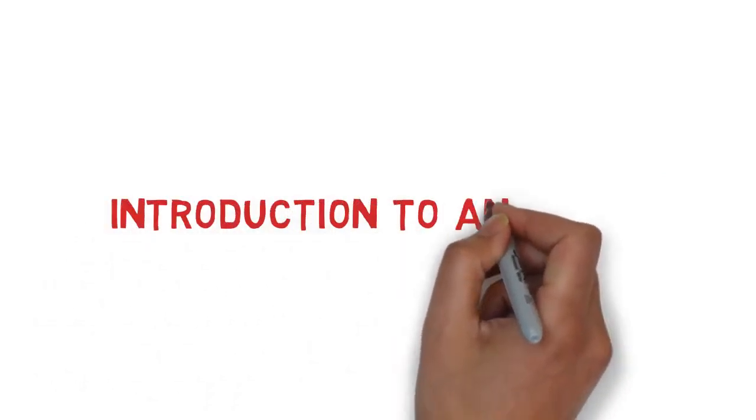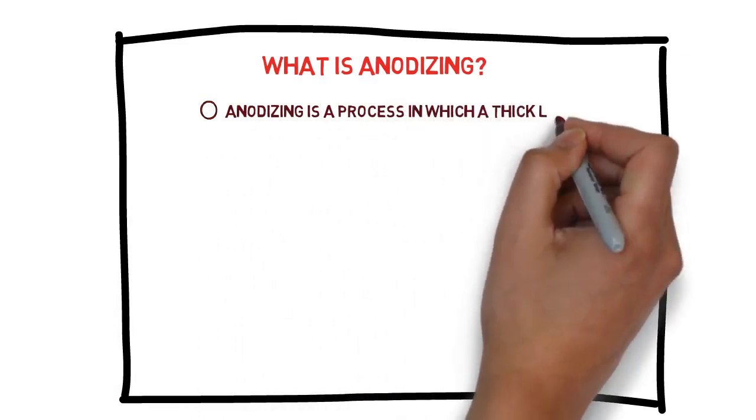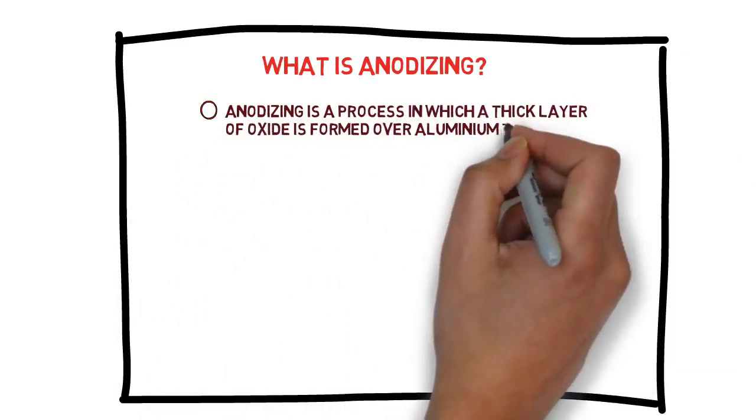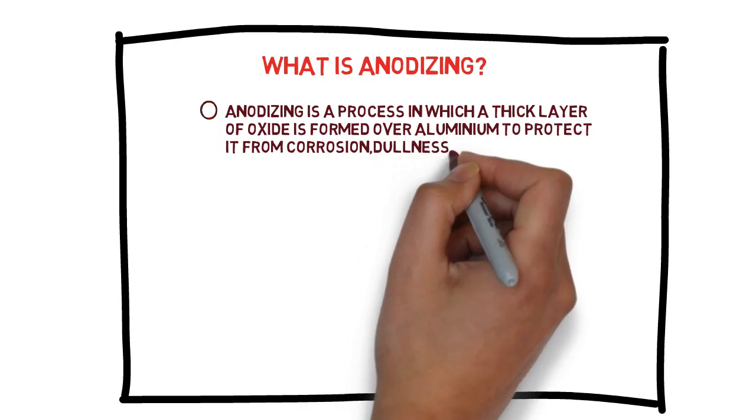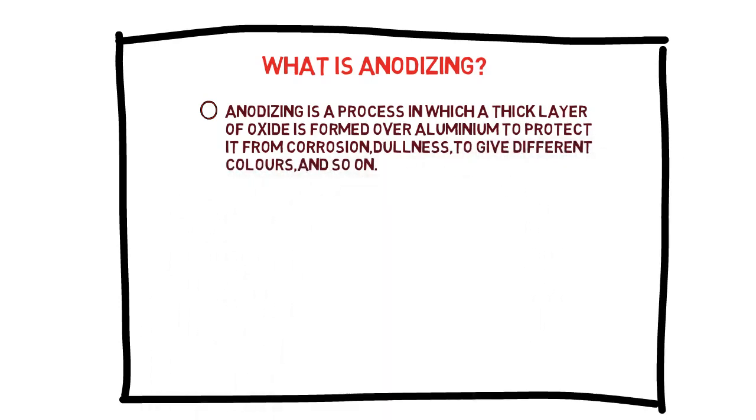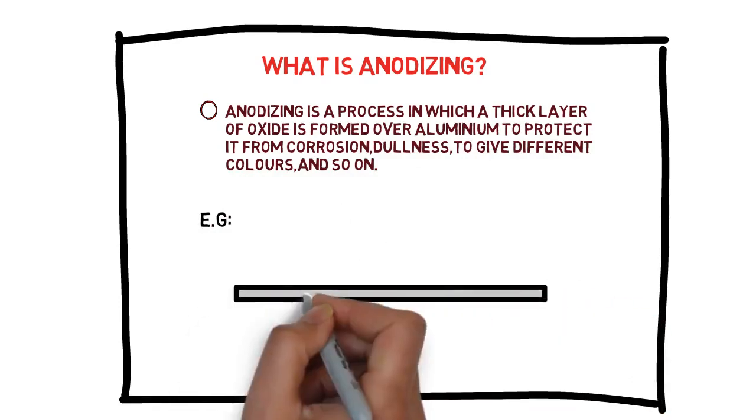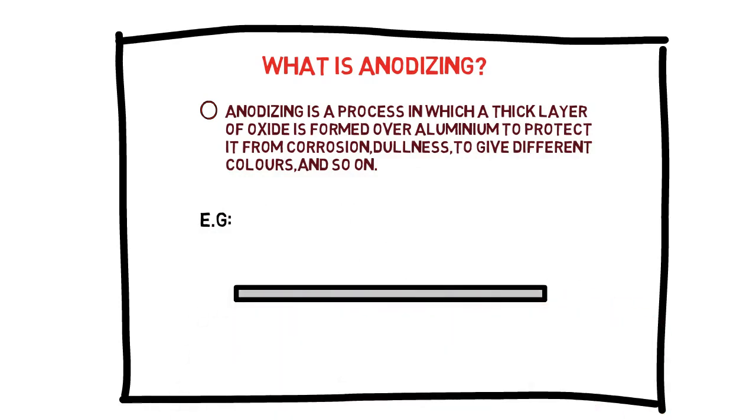Let me introduce you to anodizing. What do you mean by anodizing? Anodizing is a process in which a thick layer of oxide is formed over aluminum to protect it from corrosion, dullness, and so on. For example, we have an aluminum stick. Its color is dull and a lot of scratches can be seen on that stick.